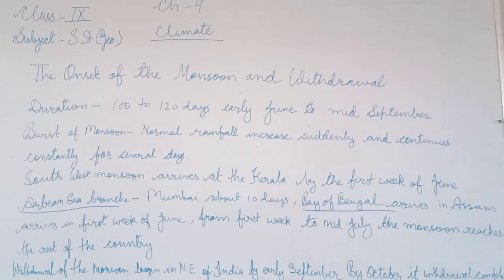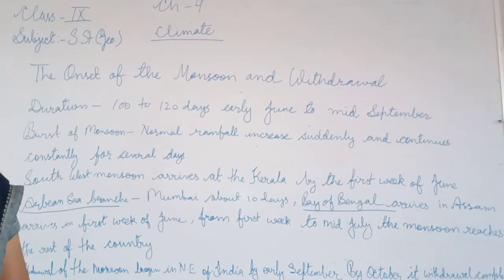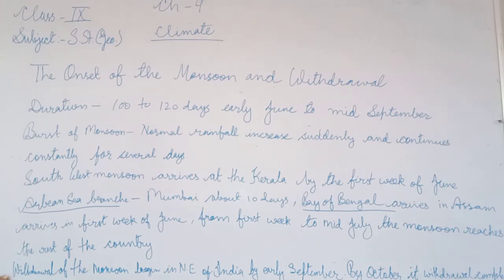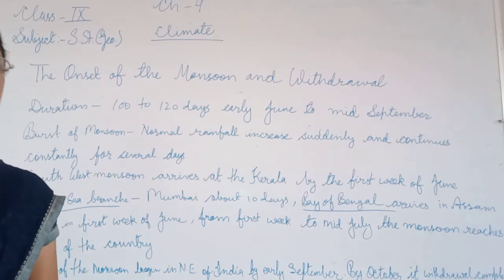The Arabian Sea and the Bay of Bengal branches of the monsoon merge over the northwestern part of the Ganga Plain. Delhi generally receives monsoon rains from the Bay of Bengal branch, by around the end of June — tentatively 29th June. By the first week of July, western Uttar Pradesh, Punjab, Haryana, and eastern Rajasthan experience the monsoon. By mid-July, the monsoon reaches Himachal Pradesh and the rest of the country.